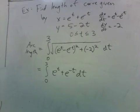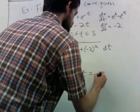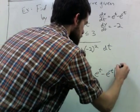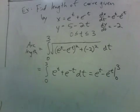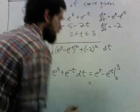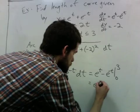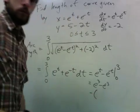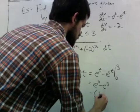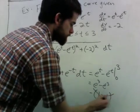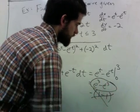And this is something that's not too difficult at all. So we get e to the t minus e to the minus t from 0 to 3. So we get e cubed minus e to the negative 3 minus 0. So this is the length.